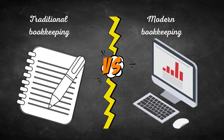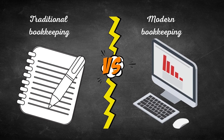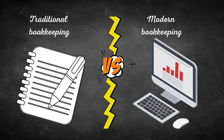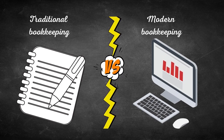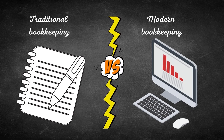The electronic speed of computers and accounting software gives the appearance that many of the bookkeeping and accounting tasks have been eliminated or are occurring simultaneously. For example, the preparation of a sales invoice will automatically update the relevant general ledger accounts such as sales, accounts receivable, inventory, and cost of goods sold.